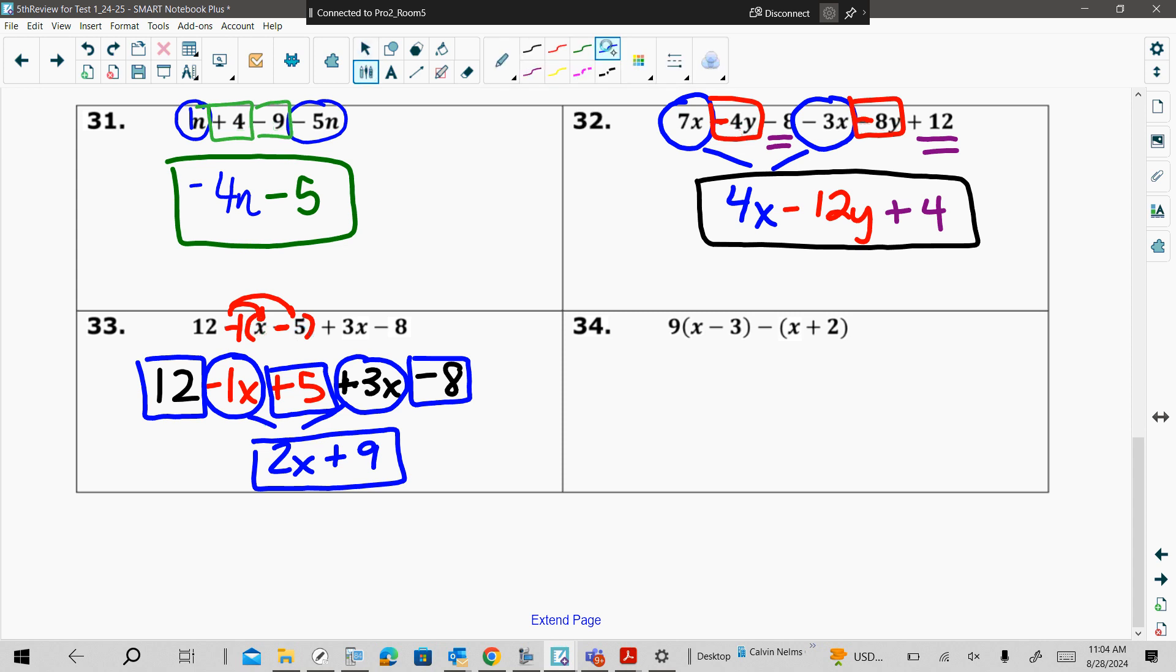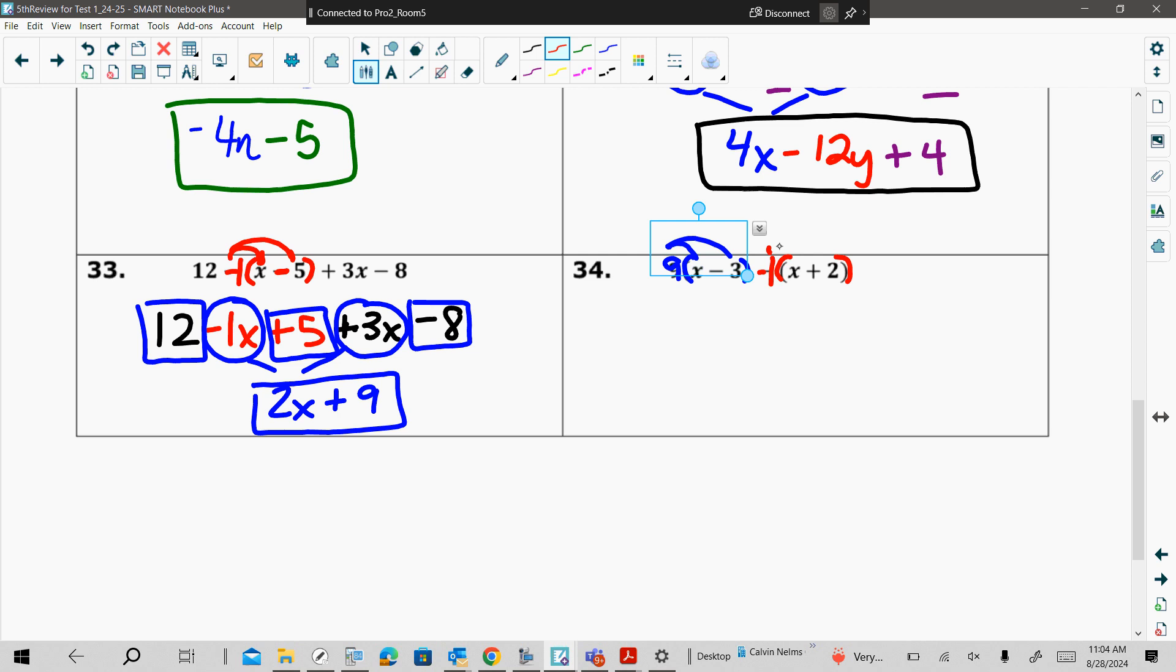So if you look at number 34, now here, I have two sets of grouping. The first grouping has a number in front. It's the nine. So I'm going to distribute the nine, multiply the nine to everything inside. The second grouping has an invisible one that I'm going to distribute. So the first nine times x is 9x. Nine times minus 3 or negative 3, negative 27. Then negative one times x. That's negative one x. Negative one times 2, negative 2. Now, we're going to combine the like terms. That means I'm combining my 9x and this minus one x. When I combine that, that's 8x. Now, I'm combining my constants, a negative 27 and a negative 2, negative 29.